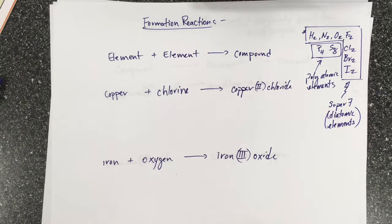We've got an example here where we've got copper and chlorine. Copper chloride is the product. So we've got a metal and a non-metal, so it's going to form an ionic compound.